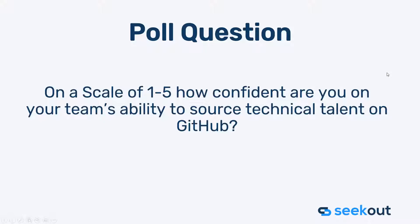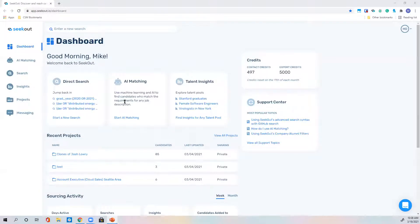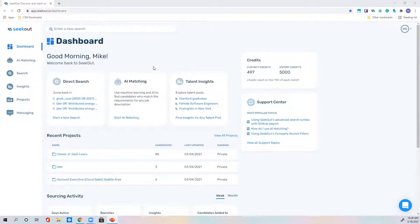To kick things off, we're submitting a poll: on a scale of one to five, how confident are you in your team's ability to source technical talent on GitHub? We'll retrieve your answers towards the middle or end of the call during Q&A. We'll now dive right into the platform. If you have questions, ask them in the chat — I'll pause about 30 minutes in to answer them.